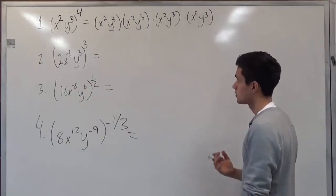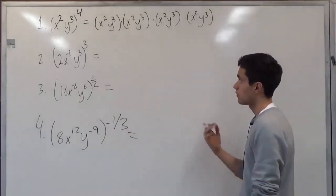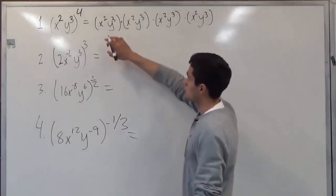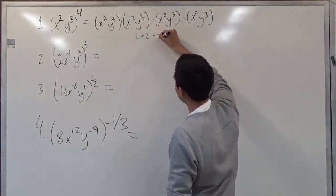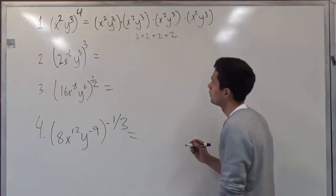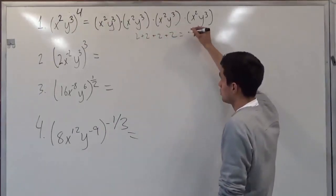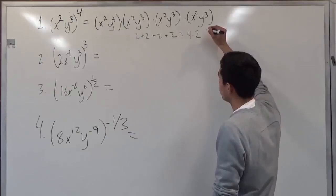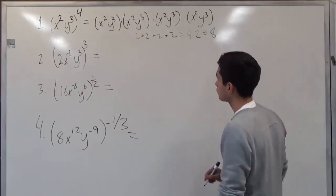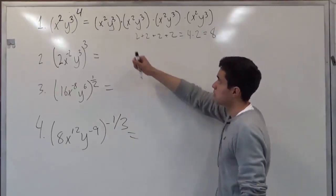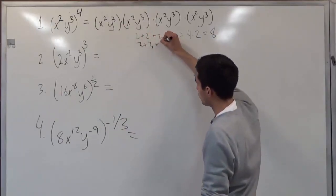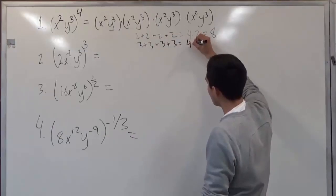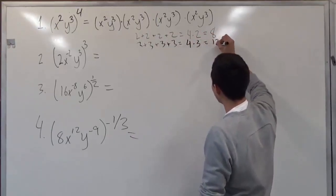So what this means is that we're adding each one. So 2 plus 2 plus 2 plus 2, which in turn is just equal to 4 times 2, which gives us 8. And the same can be applied to the 3. So we can have the 3 plus 3 plus 3 plus 3, which is 4 times 3, which gives us 12.